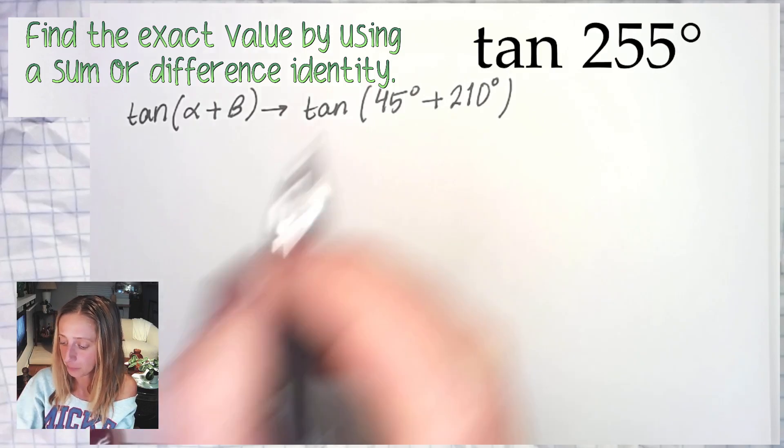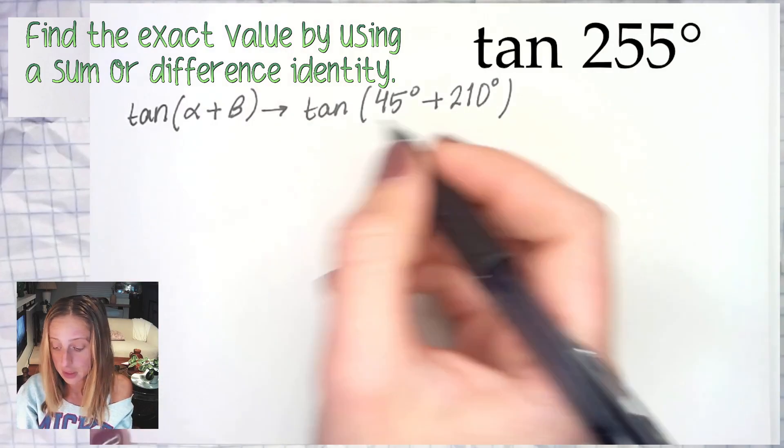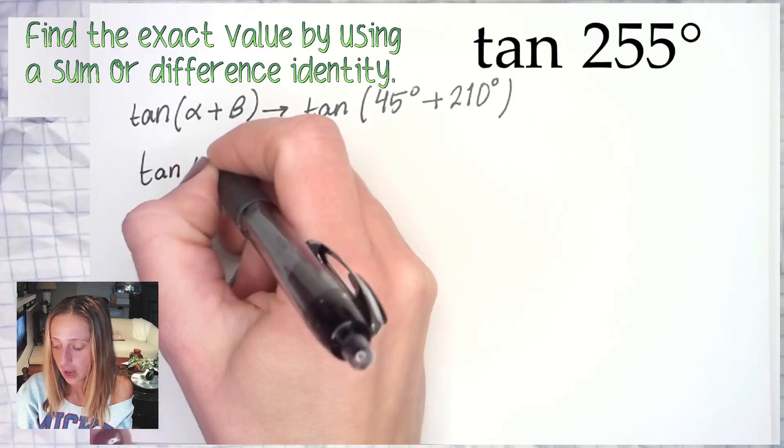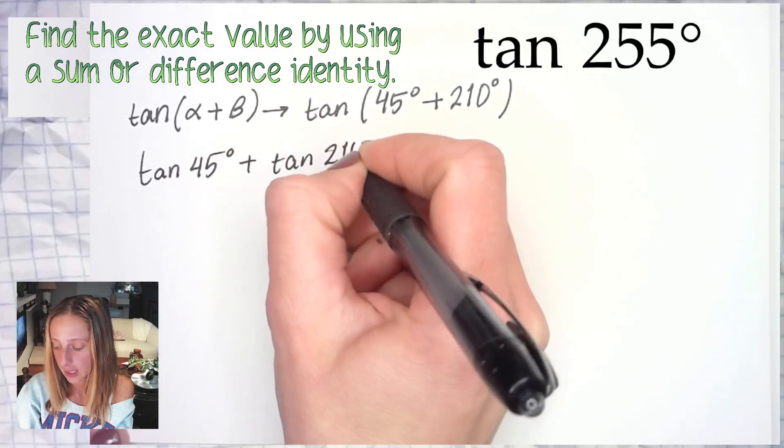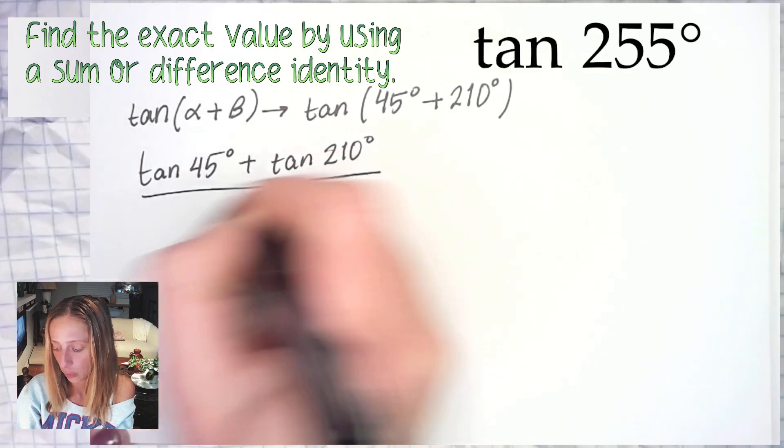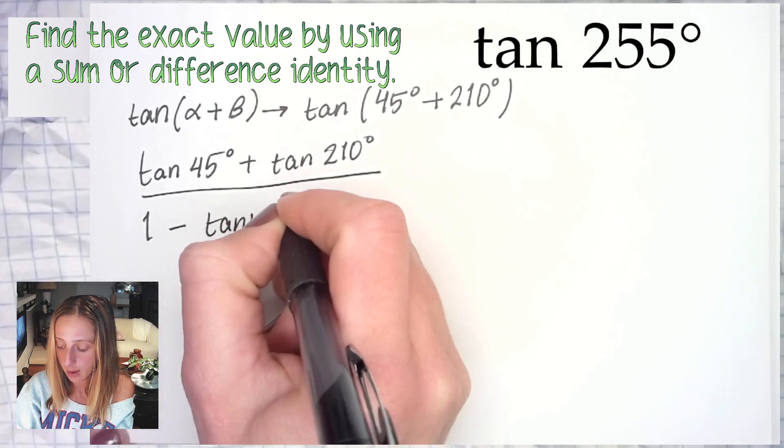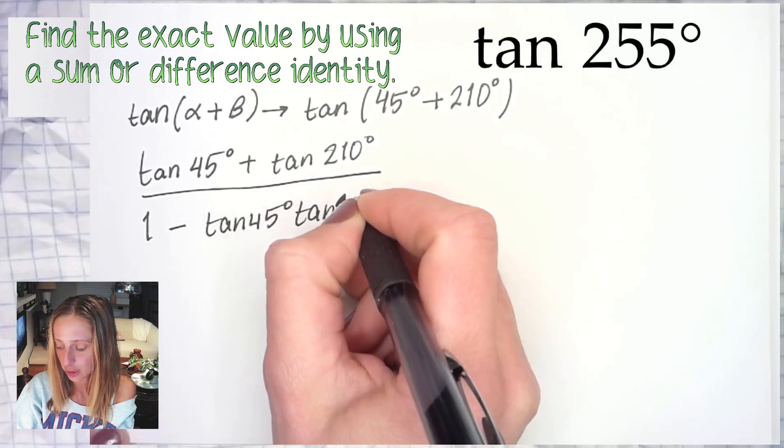From this step we are going to apply the angle sum identity for tangent. So that will give us tan of 45 plus tan of 210 degrees over 1 minus tan of 45 times tan of 210 degrees.